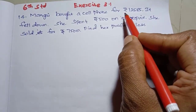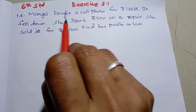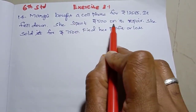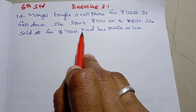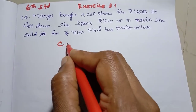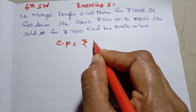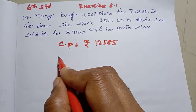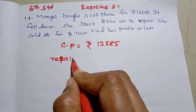Mungai bought a cell phone for rupees 12,585. It fell down, and she spent rupees 500 on its repair. She sold it for rupees 11,500. Find her profit or loss. First: cost price is 12,585, and repair expenses are rupees 500.